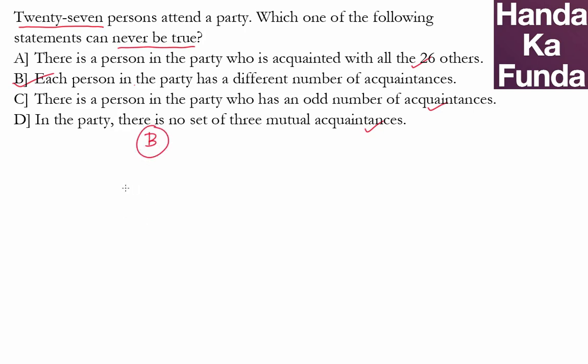But now let us check why B is the answer. What is wrong with B? Why can't it ever be true? The statement says each person in the party has a different number of acquaintances. So if there are 27 people, you will need 27 different whole numbers.